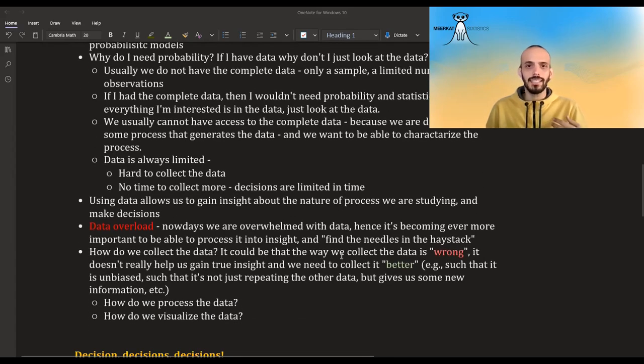Now, there can also be an opposite problem. It could be that we have too much data, it could be that we have a data overload. And it's becoming harder and harder to find a needle in the haystack. And this is another problem. And another question is, how do we even collect the data? So it could be that I'm collecting the data, but I'm collecting it wrong in a way that doesn't really give me more insight into the problem and actually misleads me completely. And there are good ways and bad ways to collect the data. And so statistics is all about everything that is related to data. It's how we collect the data, how we process the data, how we visualize the data.